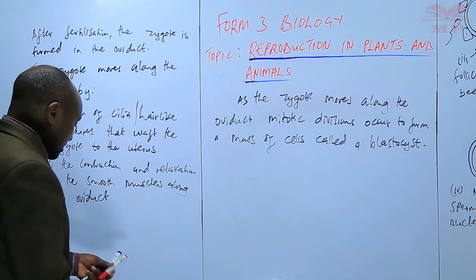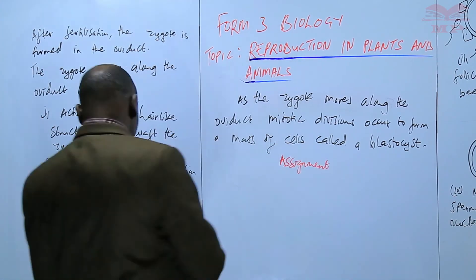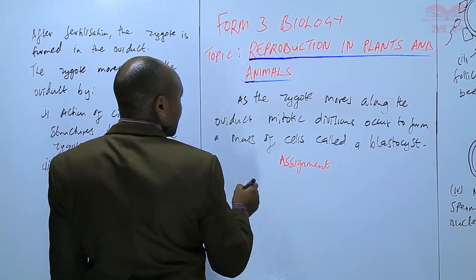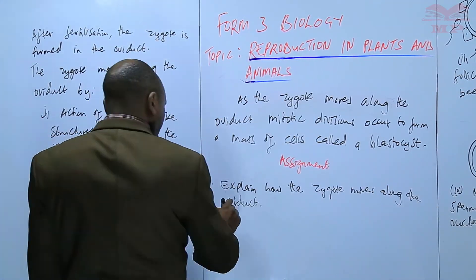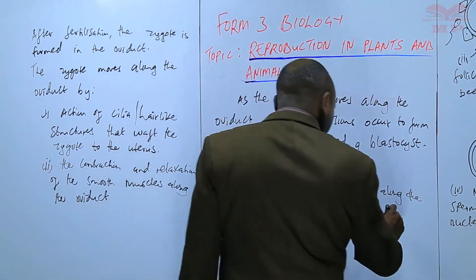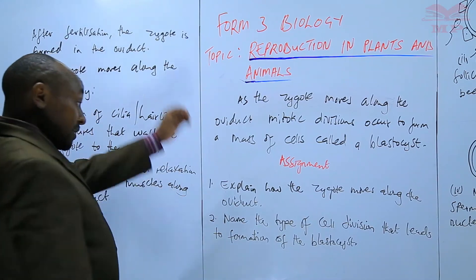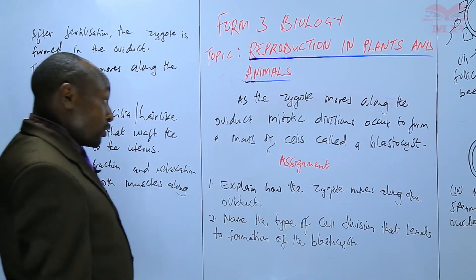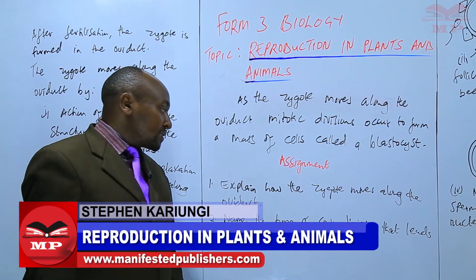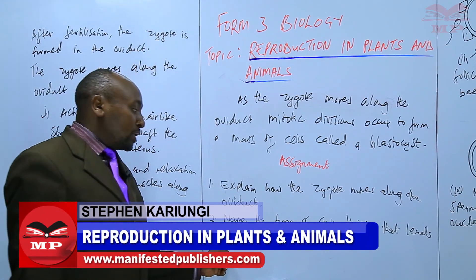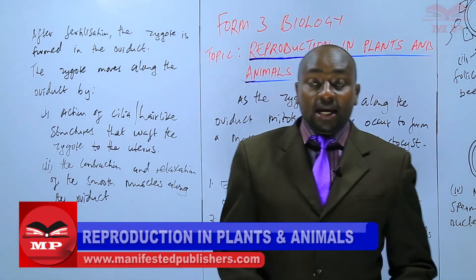We will have an assignment at this point. The first question: explain how the zygote moves along the oviduct. The second question: name the type of cell division that leads to the formation of the blastocyst. We will stop there until next time. Goodbye.